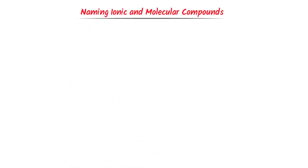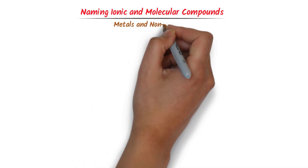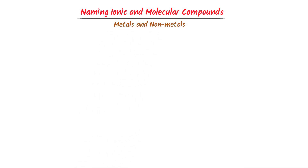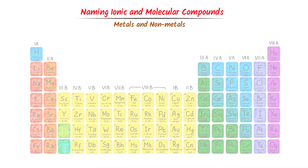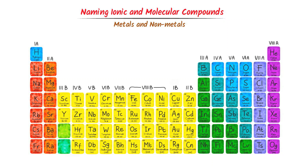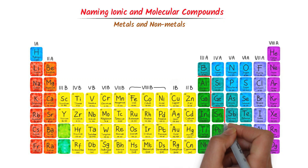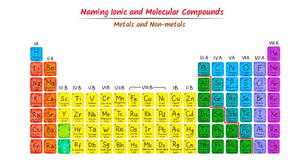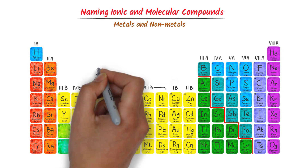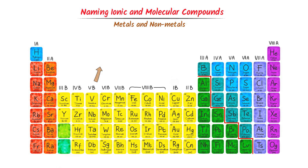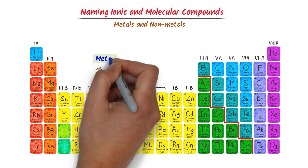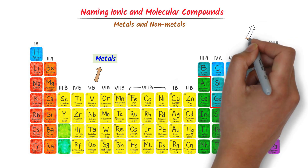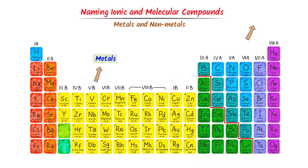Naming Ionic and Molecular Compounds. Firstly, let me teach you about metals and non-metals in the periodic table. Consider this periodic table — this line differentiates metals from non-metals. At the left side of the periodic table there are metals, while at the right side of the periodic table there are non-metals.